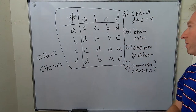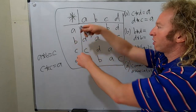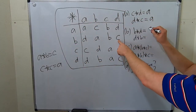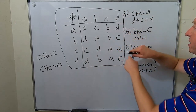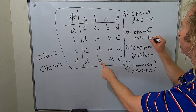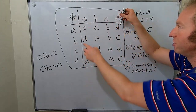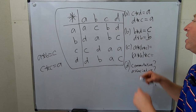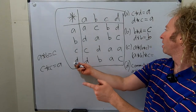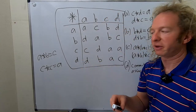Now, b star d: you find where row b and column d meet, and that gives c. Then d star b: where row d and column b meet, and that gives b. So b star d equals c, but d star b equals b — these are different.